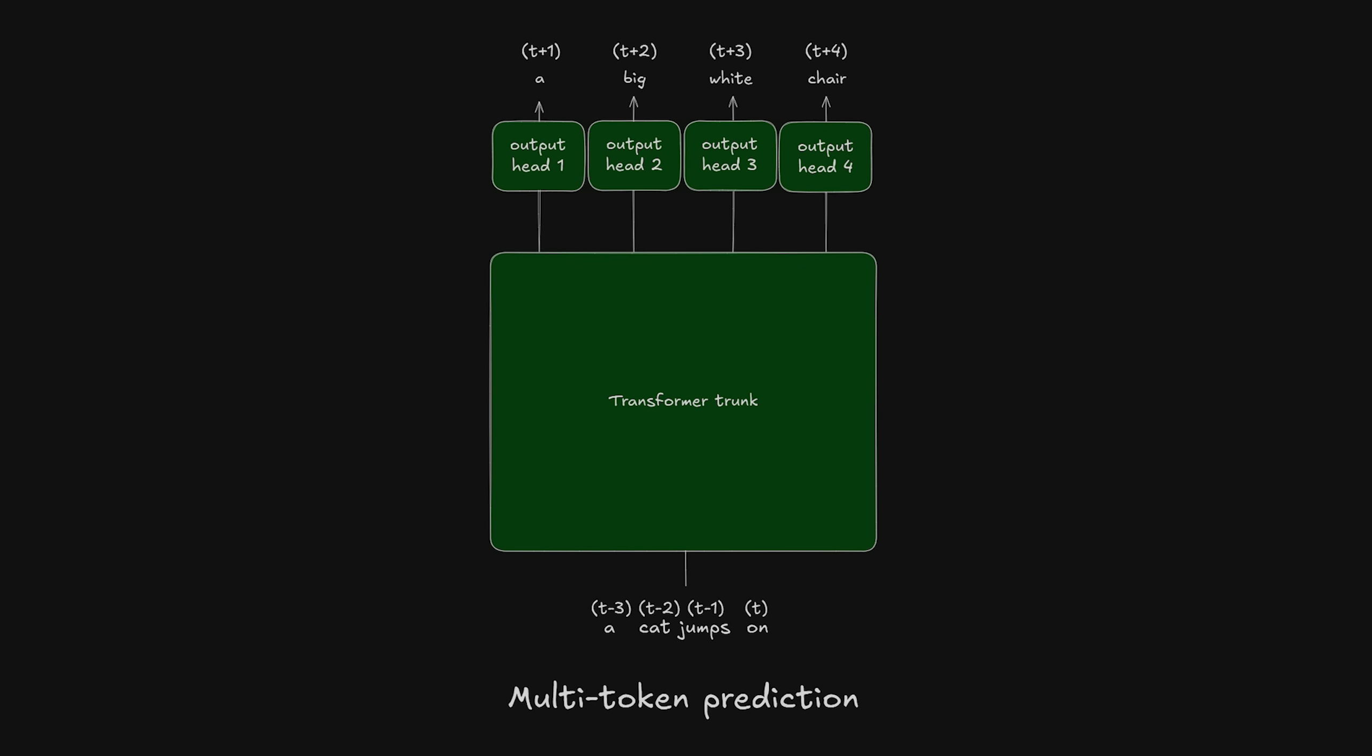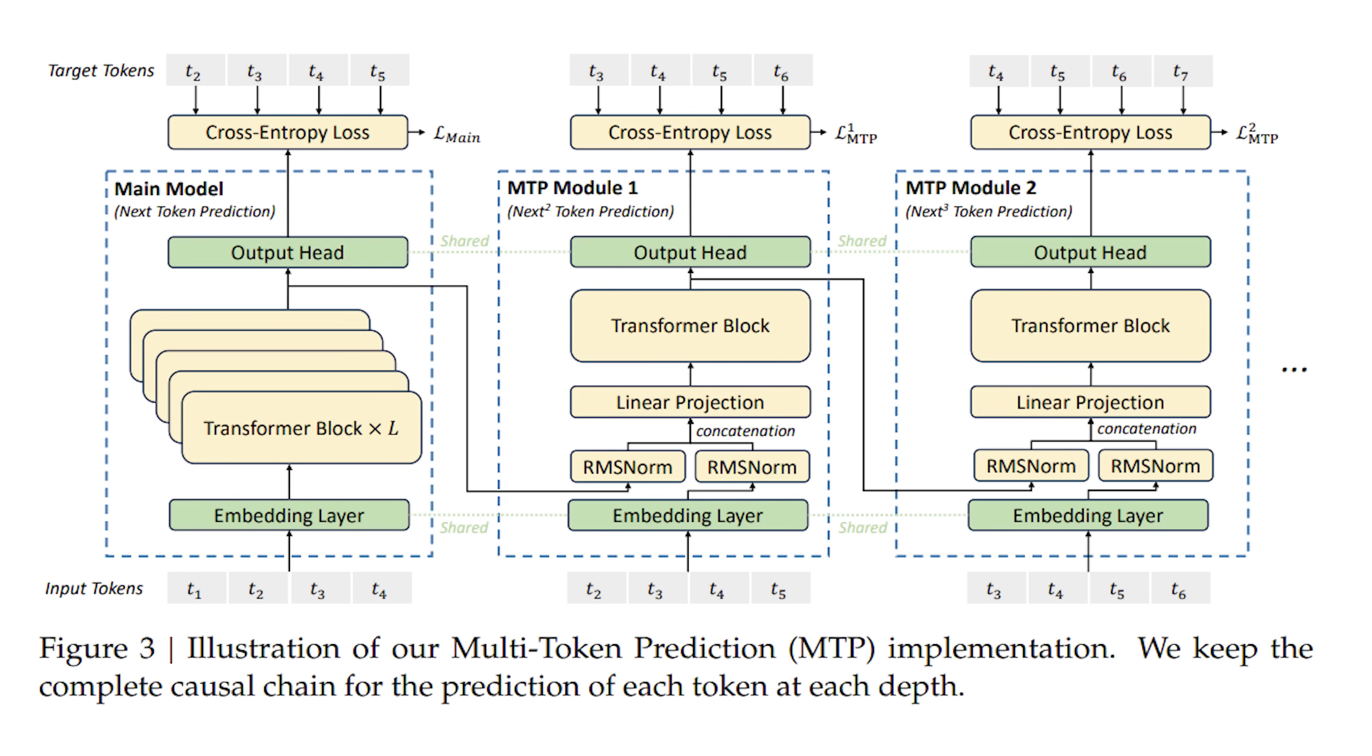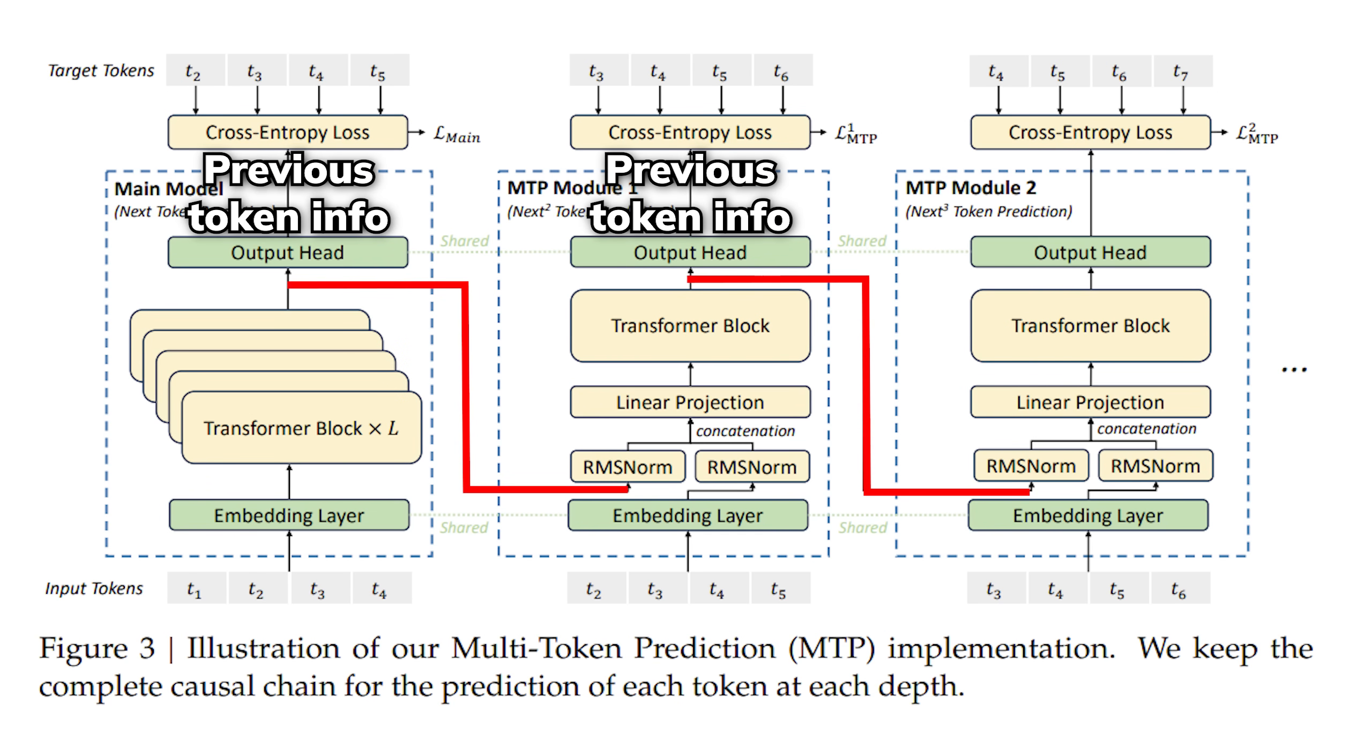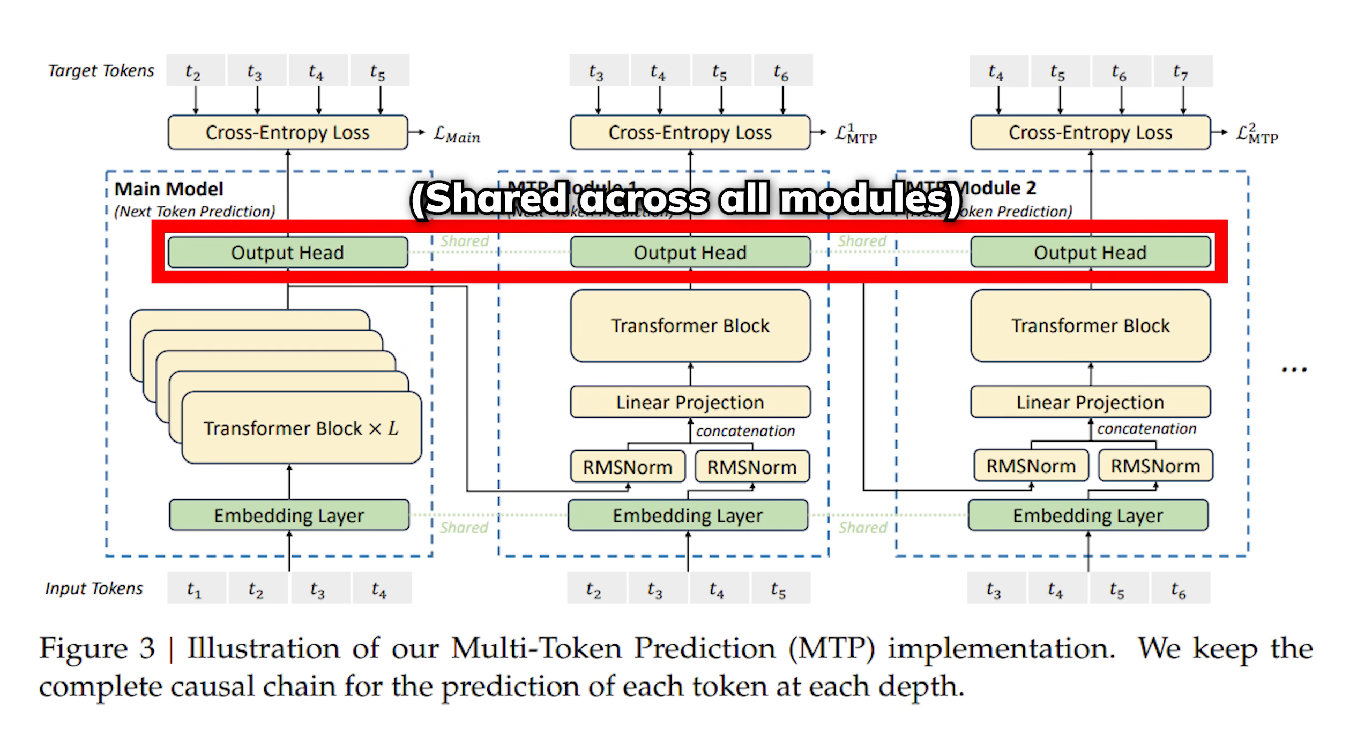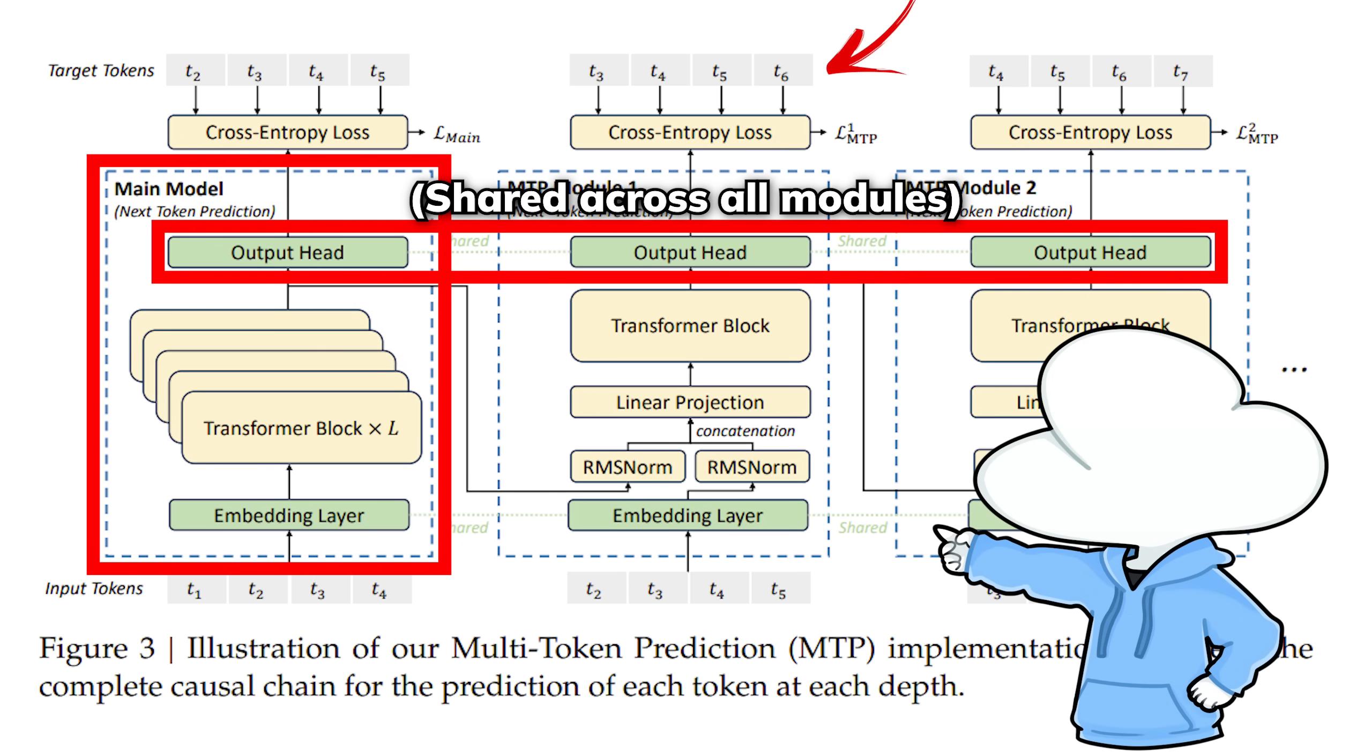This combined representation then goes through a dedicated transformer block used to generate the second token. The output of this block is then fed again into a shared output head, which is the same one the main model uses to predict the second token. So with this logic, you basically don't need to rerun the entire model to get an extra token, and the overhead is just one additional transformer block for every extra token generated.